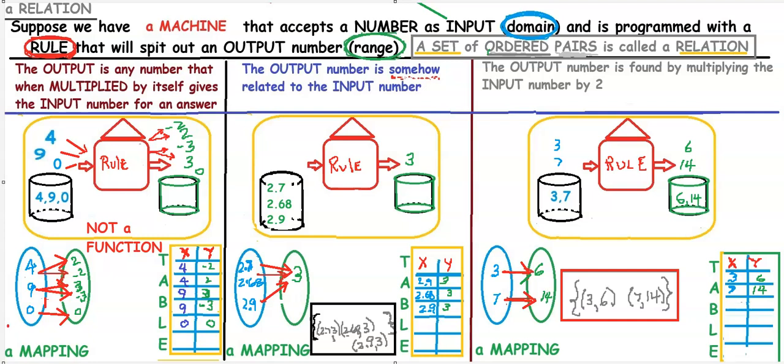This is a slightly more extensive discussion of relations that are functions and those that are not. All three problems written here are ordered pairs, shown in a shape where we have a machine. A number goes into the machine and numbers come out of the machine.